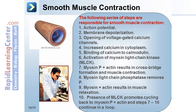The following series of steps are responsible for smooth muscle contraction: action potential and membrane depolarization opens voltage-gated calcium channels, causing an increase in cytoplasmic calcium. The calcium binds to calmodulin, activating myosin light chain kinase (MLCK). Myosin-P and actin combine, resulting in cross-bridge formation and muscle contraction. Myosin light chain phosphatase removes the phosphate, and myosin plus actin results in muscle relaxation. The presence of MLCK promotes cycling back to myosin-P plus actin, and steps 7 through 10 continue in a loop.